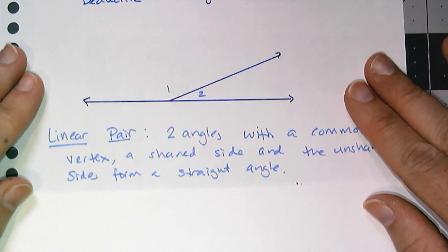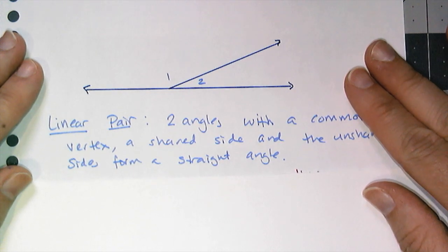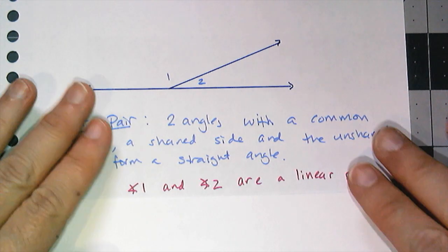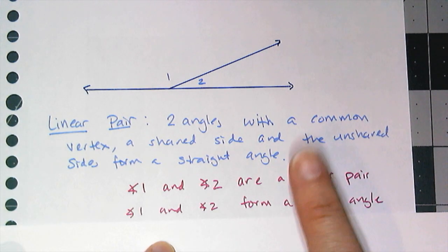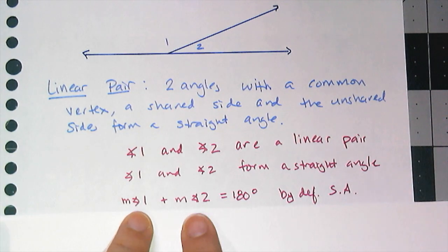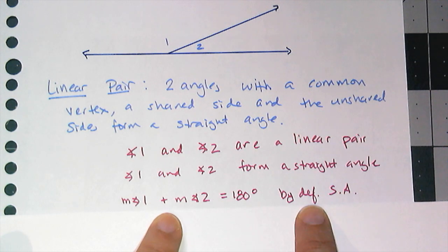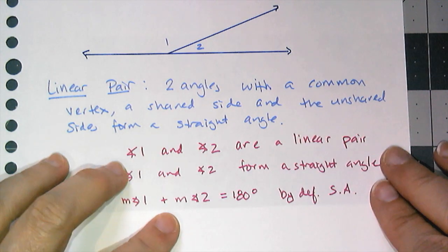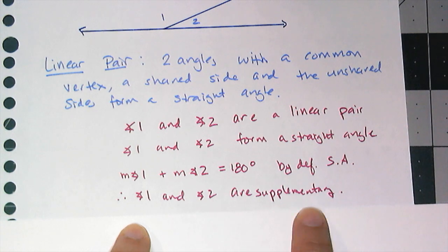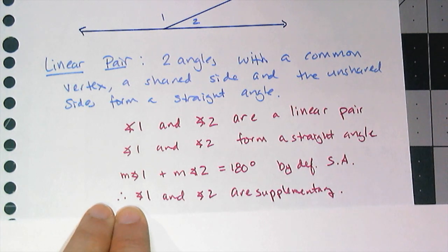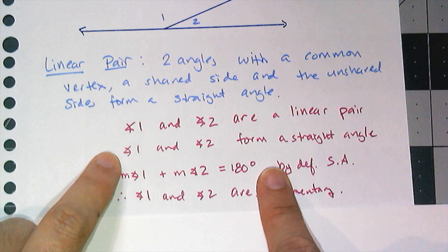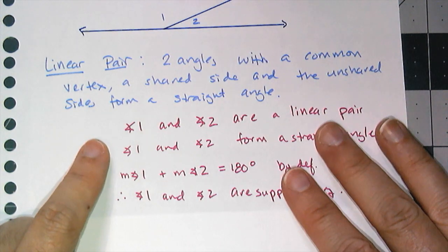And doing so is called deductive reasoning. I can first say that angle one and angle two are a linear pair by the definition of linear pair. Then I can also say that angle one and angle two form a straight angle, also coming from the definition of a linear pair. And then I can say the measure of angle one plus the measure of angle two has to be 180, because the definition of a straight angle says it's got to be 180 degrees. Therefore, angle one and angle two are supplementary. This is an informally written proof using deductive reasoning showing that linear pairs are supplementary.